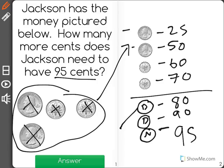Now, two dimes and one nickel is worth a total of 25 cents. So Jackson needs 25 cents more to have 95 cents.